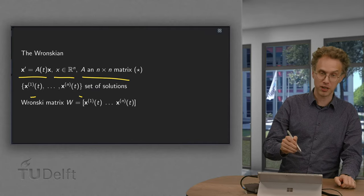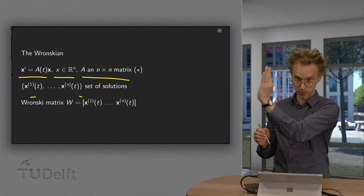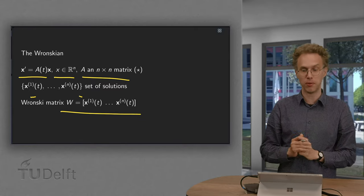Then we can form the Wronskian matrix. Just put your solutions as columns into a matrix, and I call this the matrix W.